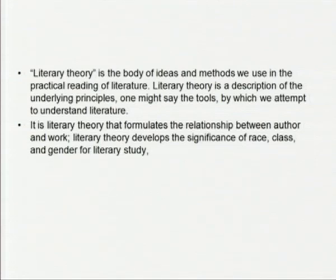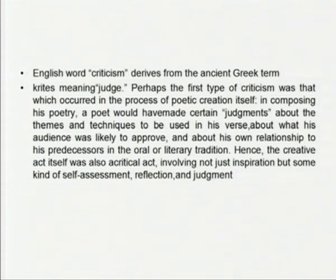Literary theory is a description of the underlying principles — the tools by which we attempt to understand literature. It formulates the relationship between author and work and develops the significance of race, class, and gender for literary studies. The English word 'criticism,' like 'theory,' is derived from the ancient Greek term 'critique,' meaning 'judge.' Perhaps the first type of criticism occurred in the process of poetic creation itself — in composing poetry, a poet would make certain judgments: what words to choose, what will be the structure of the rhythm. The creative act itself was also a critical act.